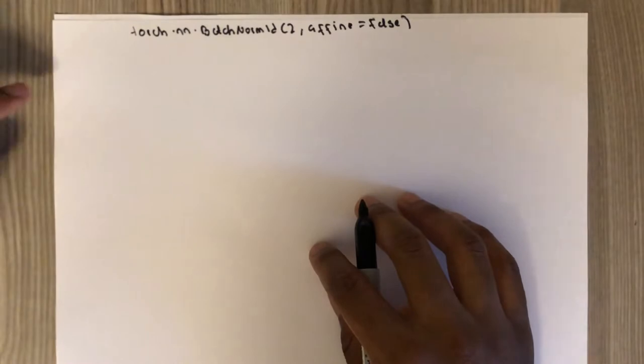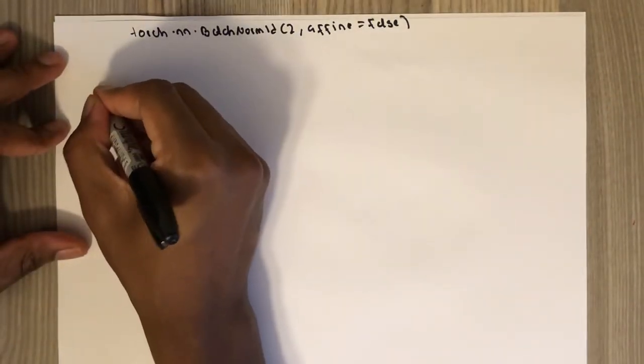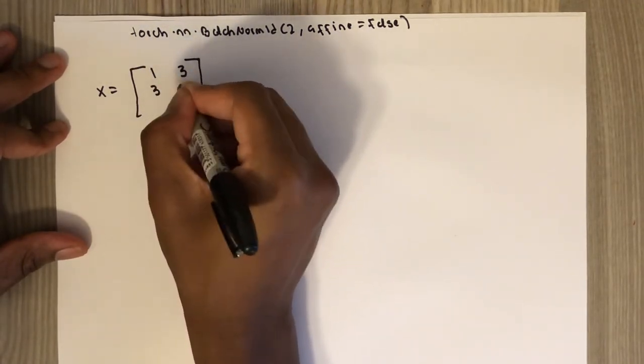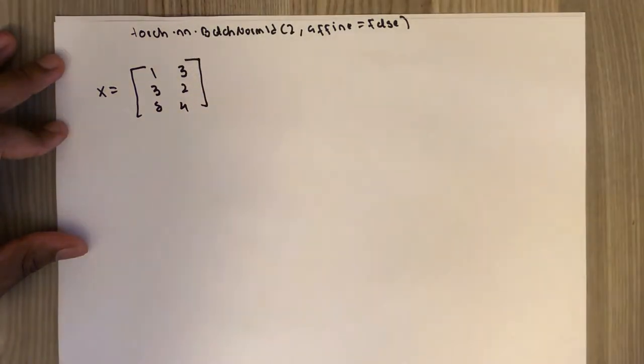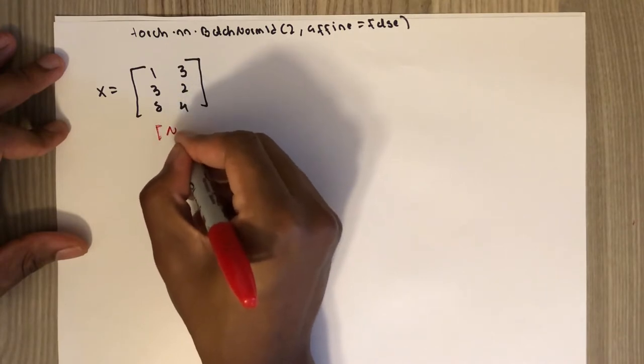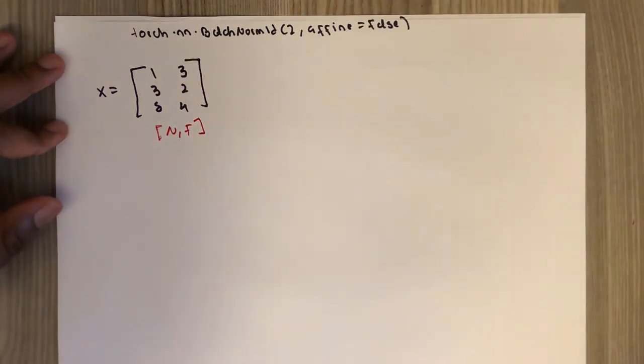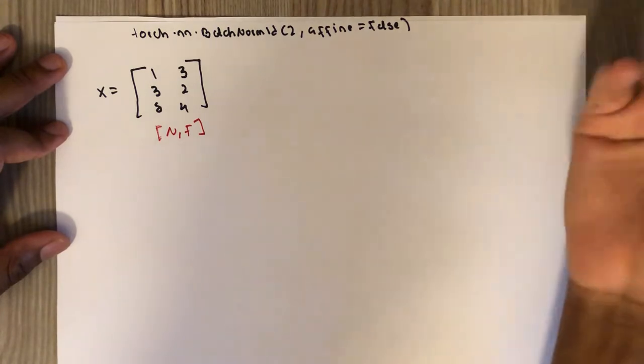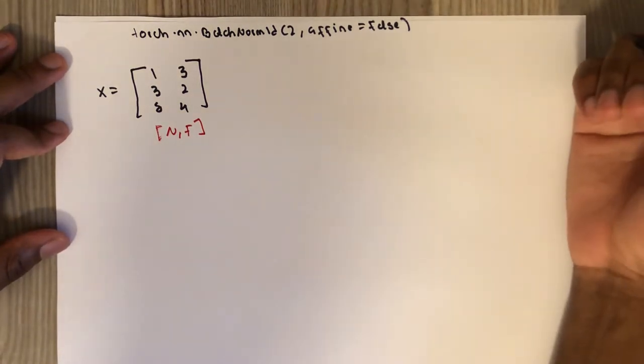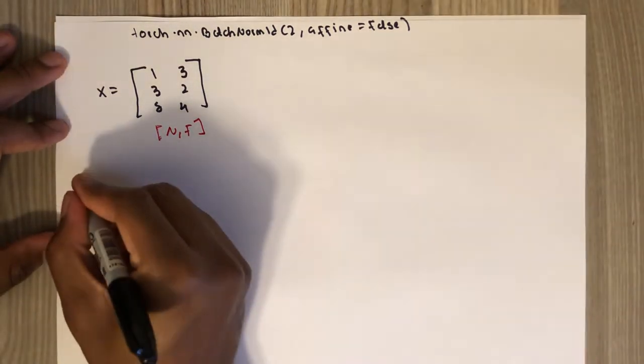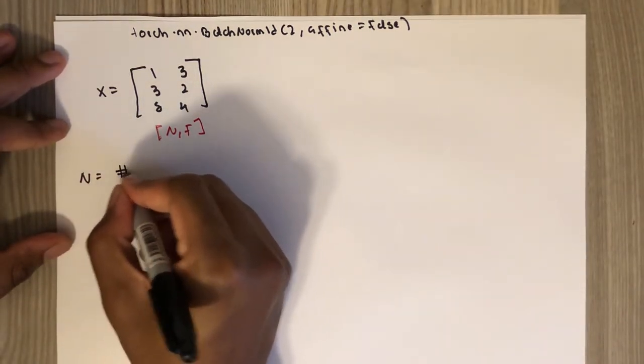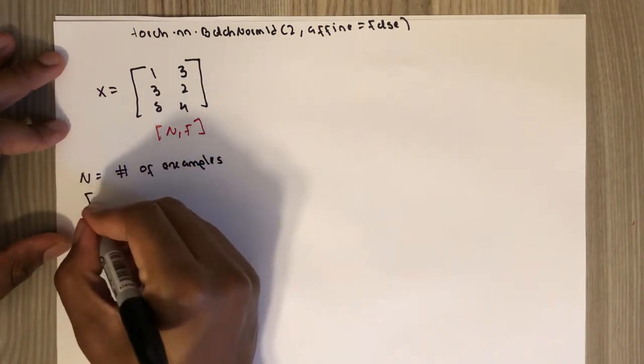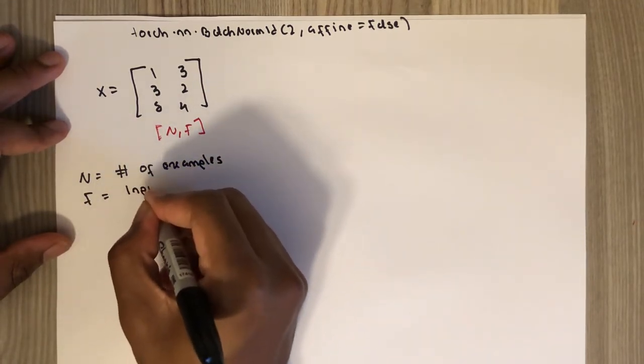So the input, let's say the input is something like this, and the dimension is N by F. This module can be used between fully connected layers. It can be used to normalize the activations after a fully connected layer. N is the number of training examples.